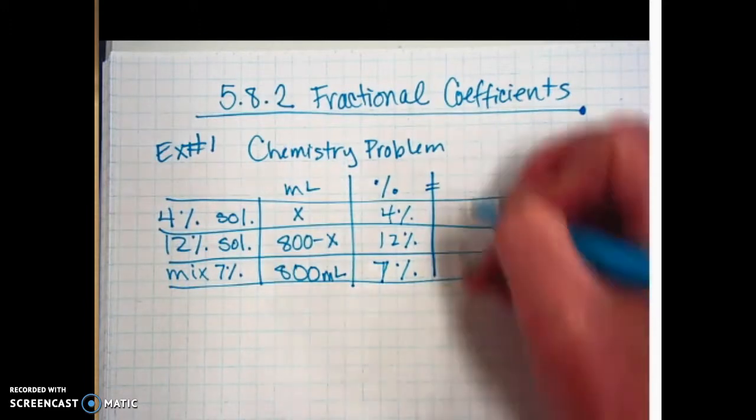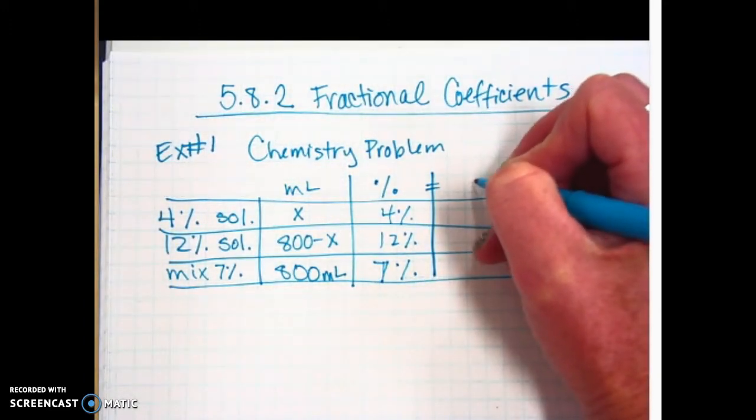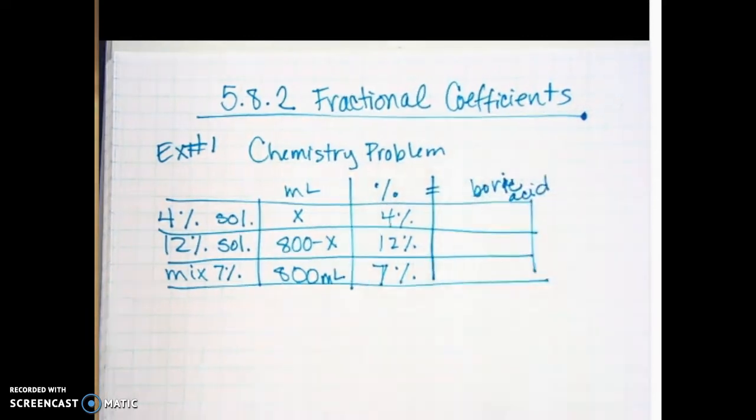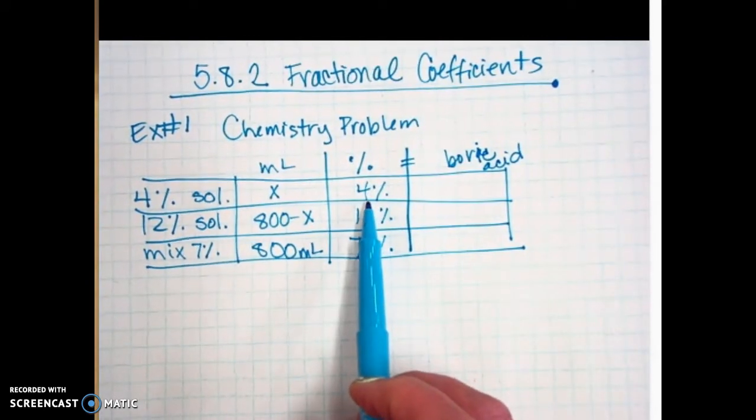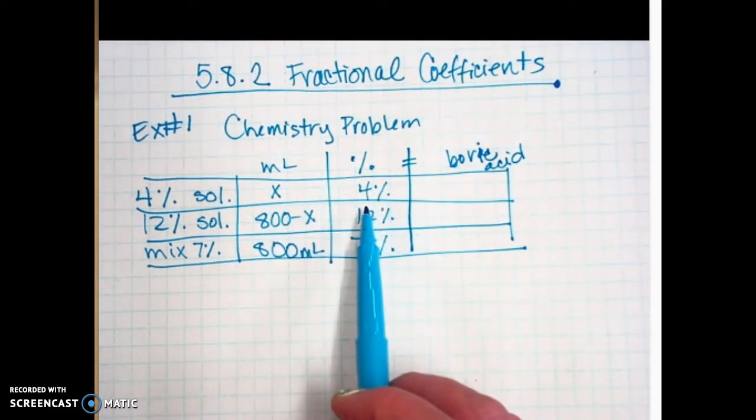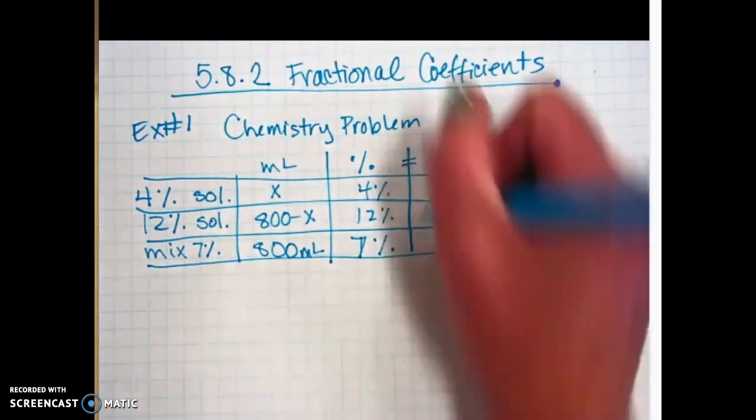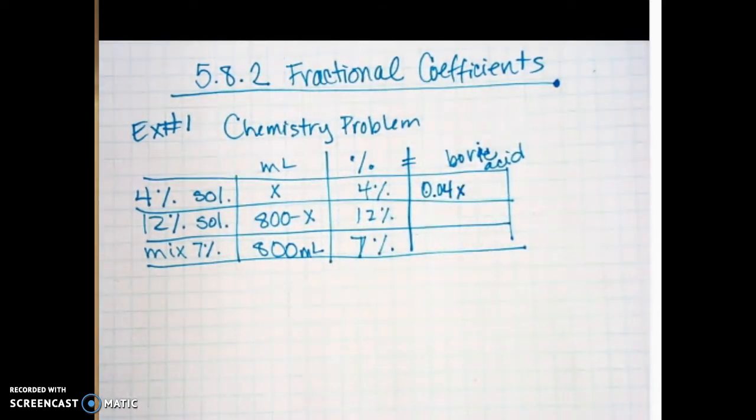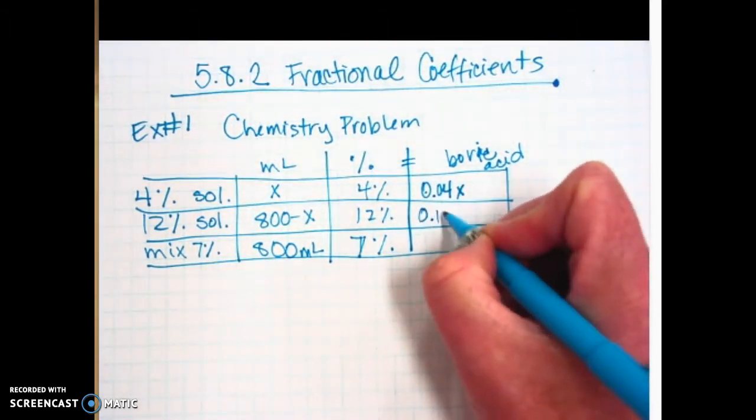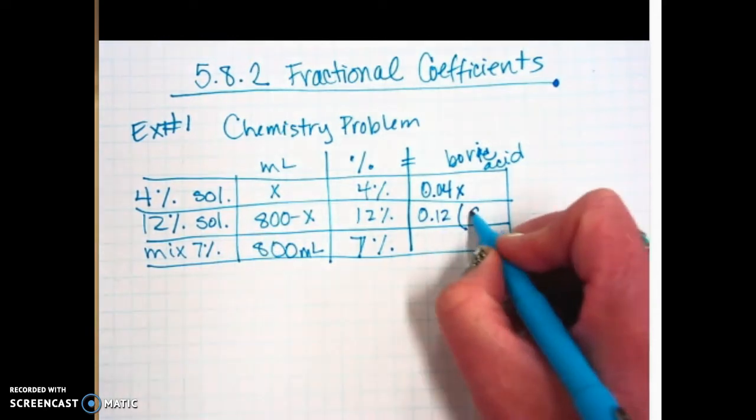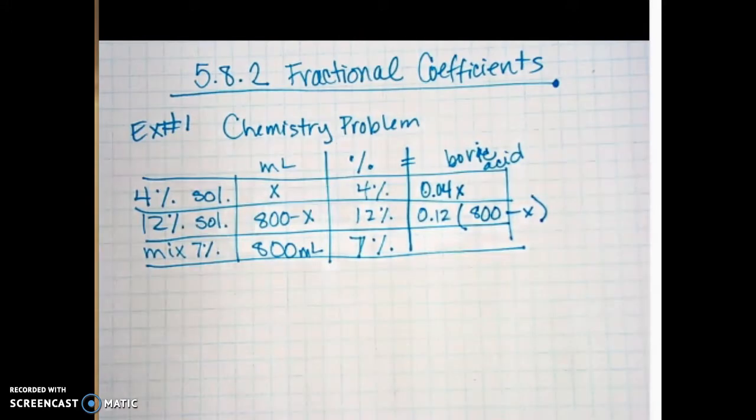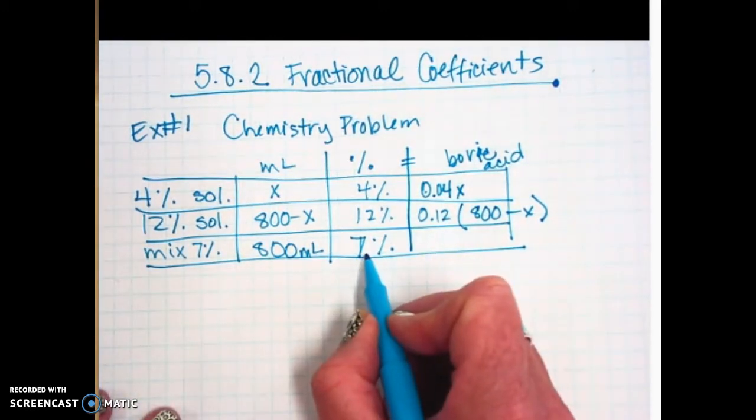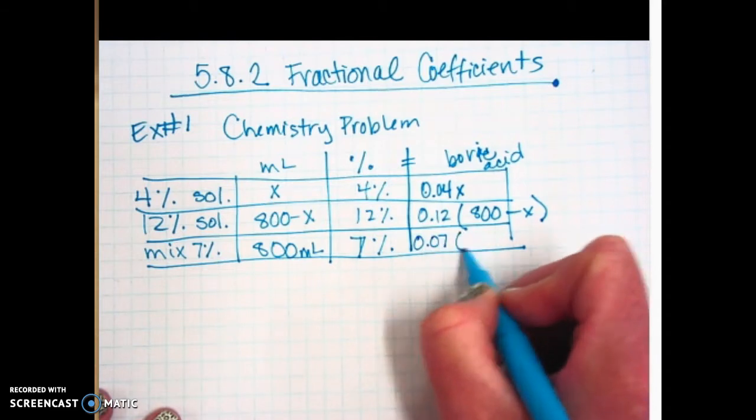All this is going to get us the third column, which is how much of the boric acid. We're going to change the percent to a decimal and multiply it by the milliliters. So 4% as a decimal is 0.04. So we're going to take 0.04, multiply it by the x. 12% as a decimal is 0.12. So 0.12 times the 800 minus x. I'm going to put that in parentheses. And then the mixture, we're going to change the 7% to a decimal. So 0.07 times the 800.